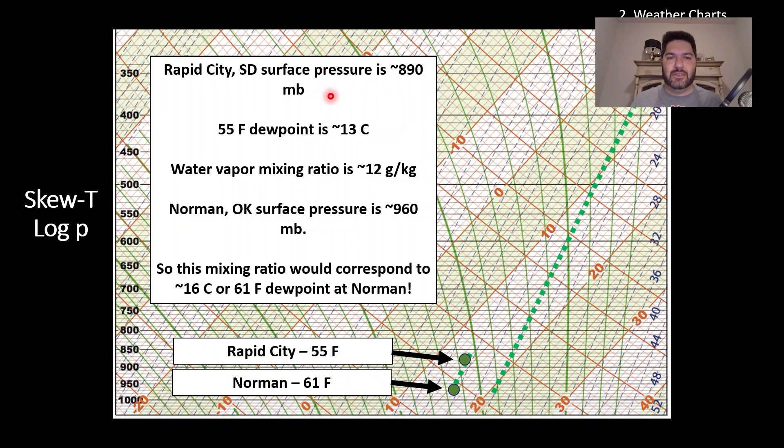Let me explain in the analysis how this works out. Let's say that Rapid City, South Dakota has a surface pressure of 890 millibars. It's slightly elevated, kind of in the higher plains there. If it has a 55 dewpoint, that's 13 Celsius. That water vapor mixing ratio is 12 grams per kilogram or approximately. Now, if you took that same water vapor mixing ratio and moved it down to 960 millibars, which is where Norman, Oklahoma is, you'd actually get a 61 degree dewpoint. So what that means is that the 55 degree dewpoint at Rapid City is the same as a 61 degree dewpoint at Norman, which means that whenever you're in the higher terrain and you see higher dewpoints, that's something to watch out for. Something to bear in mind as you're forecasting out there.